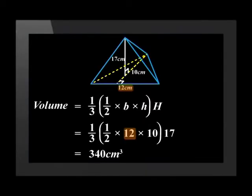Our next step is to substitute in the values. The length for the base is 12, the height for the base is 10, and the height of the solid is 17 cm. This gives us 340 cm³.